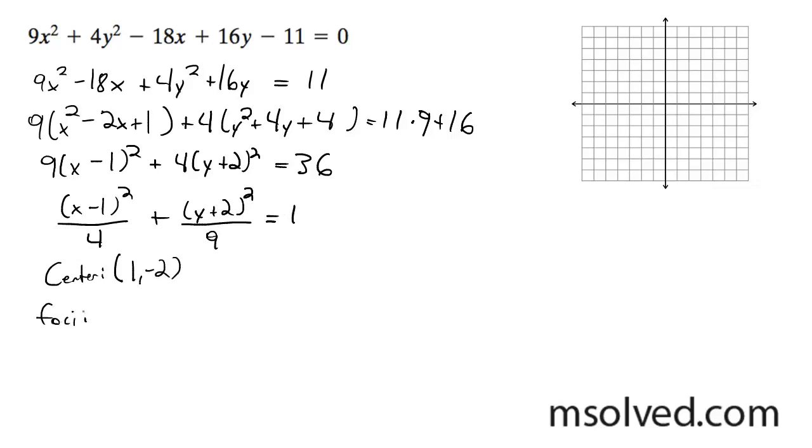Our foci is going to be equal to, so our foci distance is going to be 9 minus 4, which is equal to root 5. It's going to be (1, -2 - √5), then (1, -2 + √5).